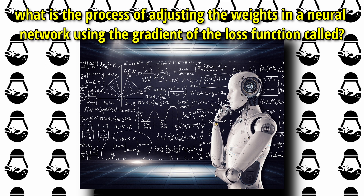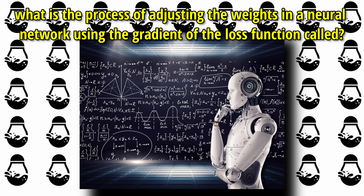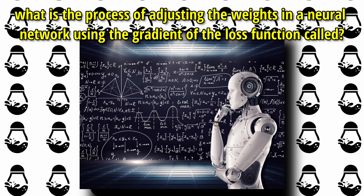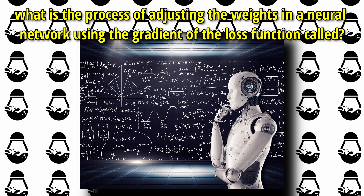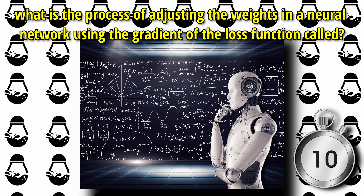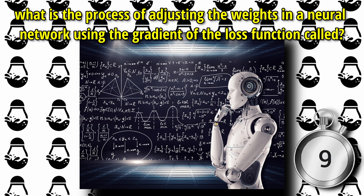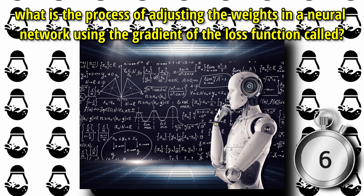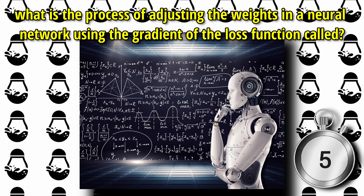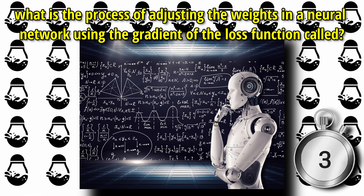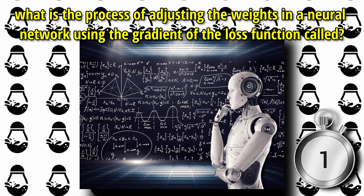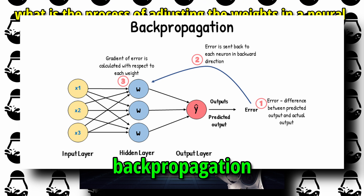Next question. In machine learning, what is the process of adjusting the weights in a neural network using the gradient of the loss function called? The answer is backpropagation.